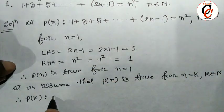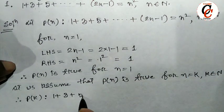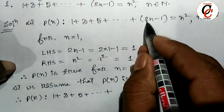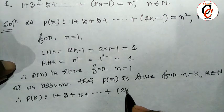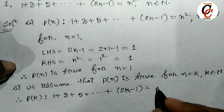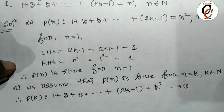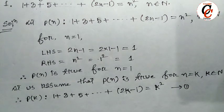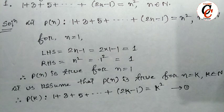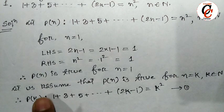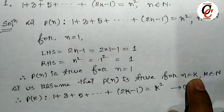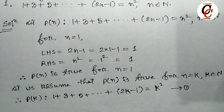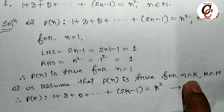We take this as equation number one. Now this is the main step — when we assume the given statement is true for n equal to k, then it must also be true for the next value of k. The next value of k means k plus 1. So we have to prove that the given statement is also true for n equal to k plus 1.